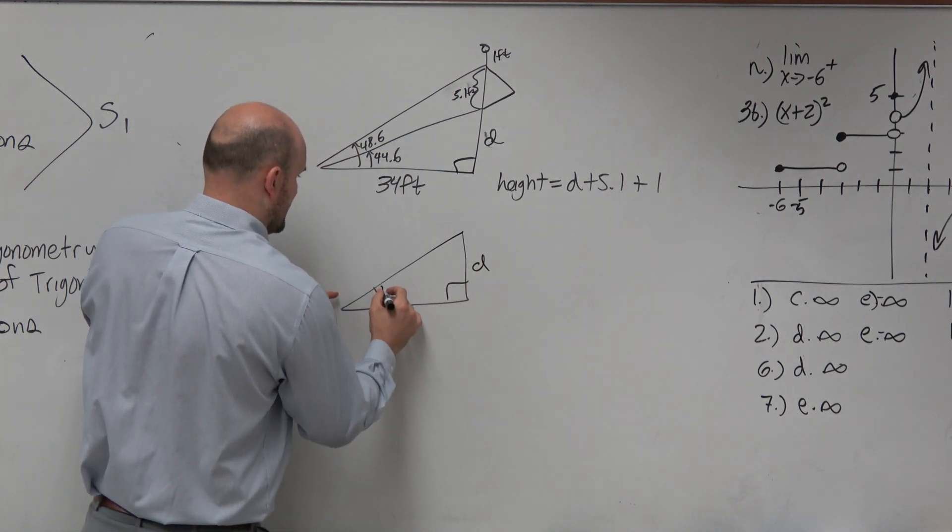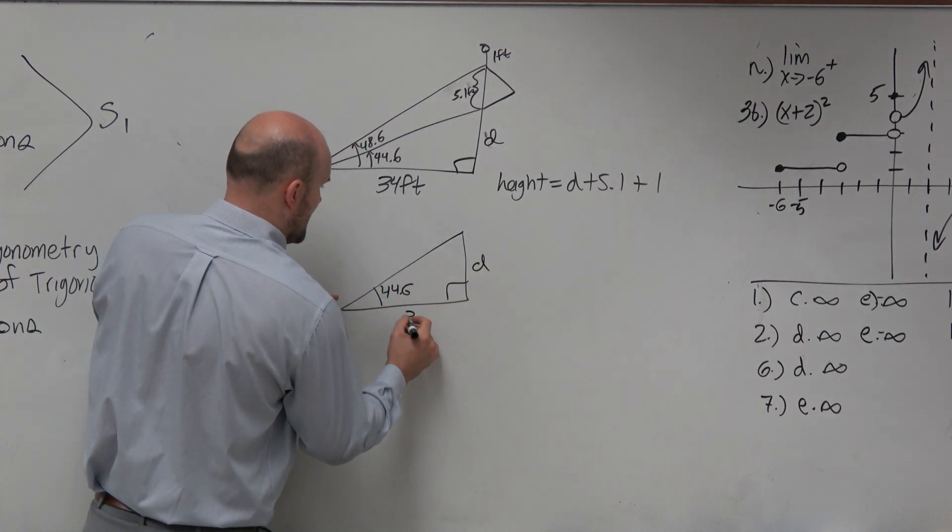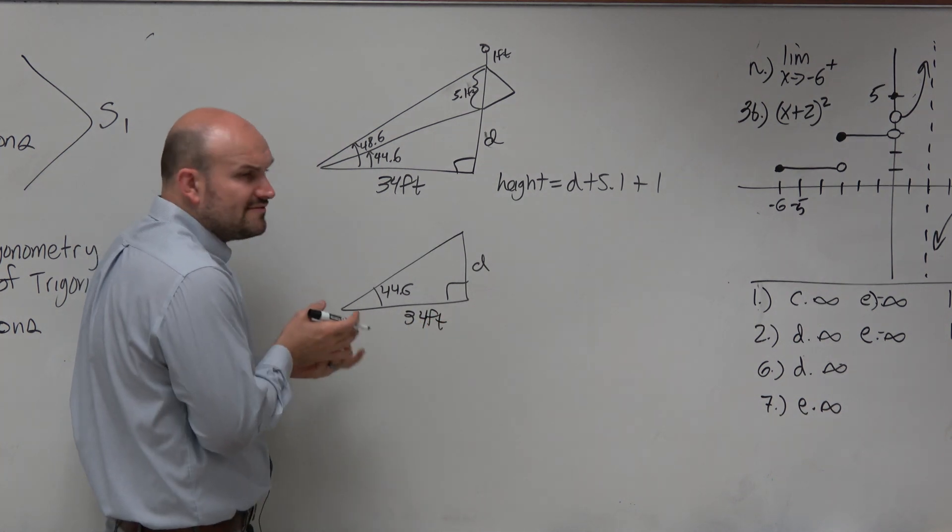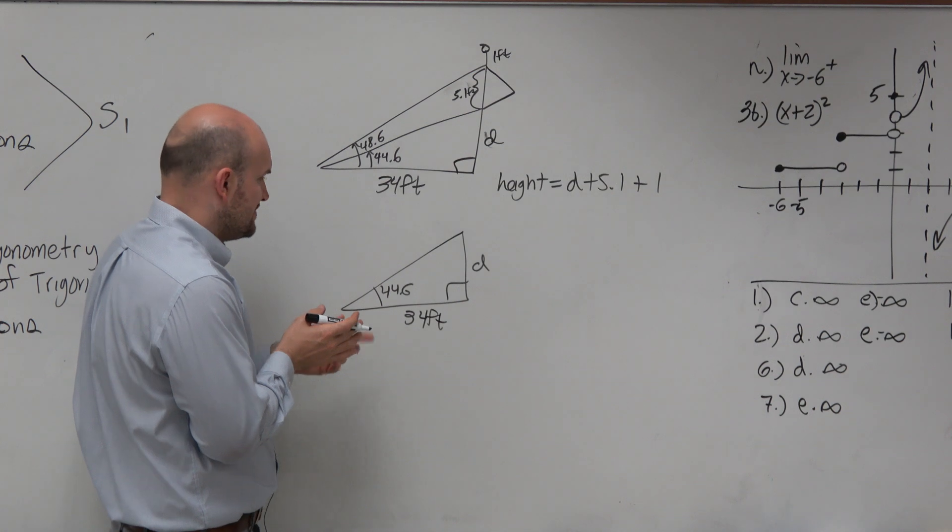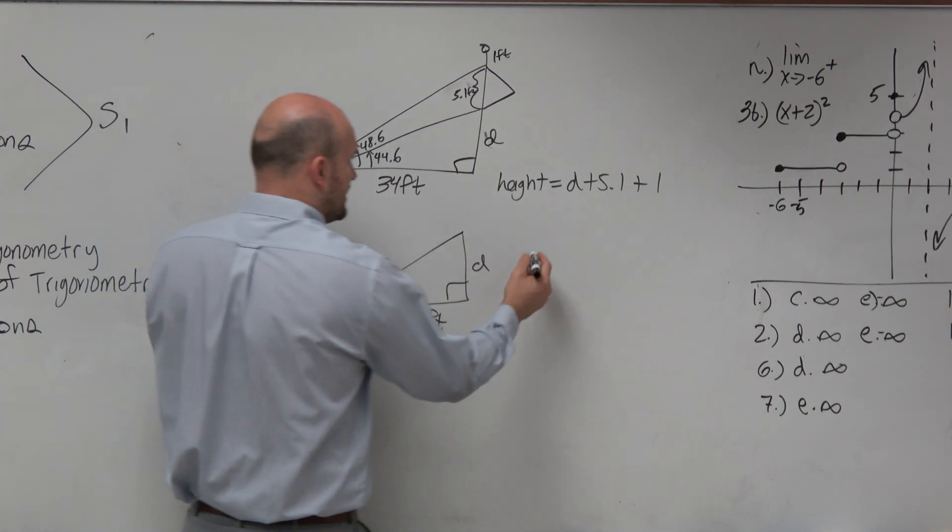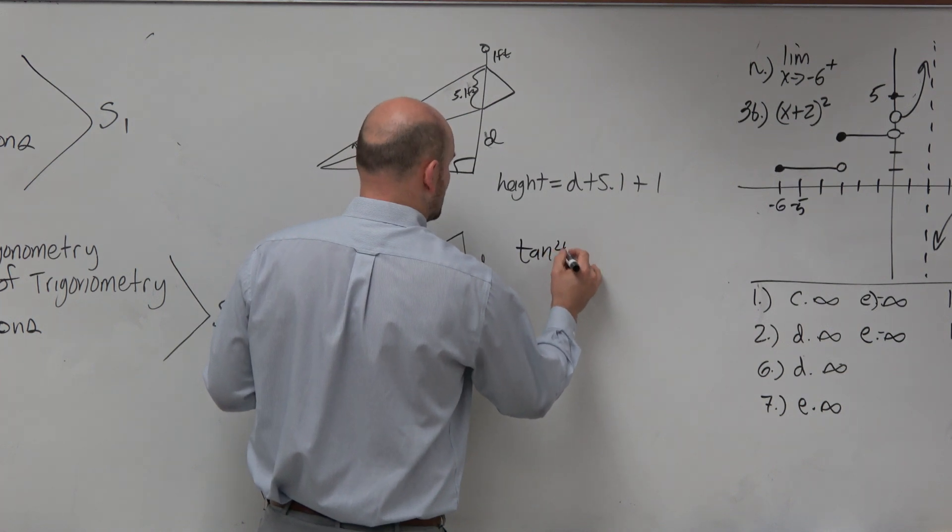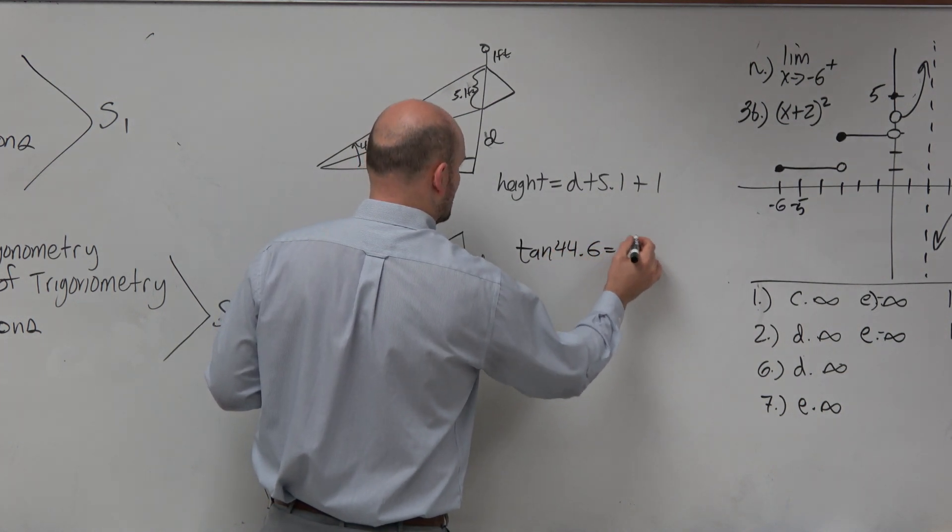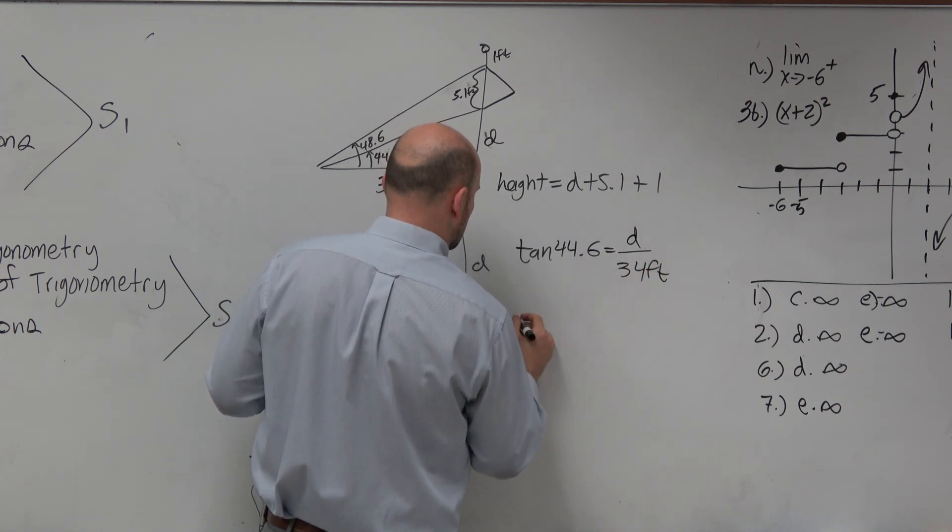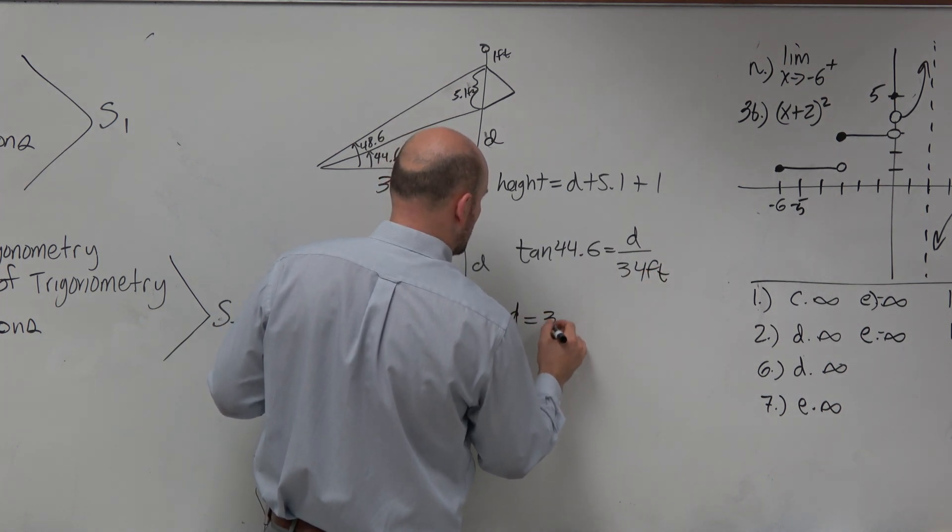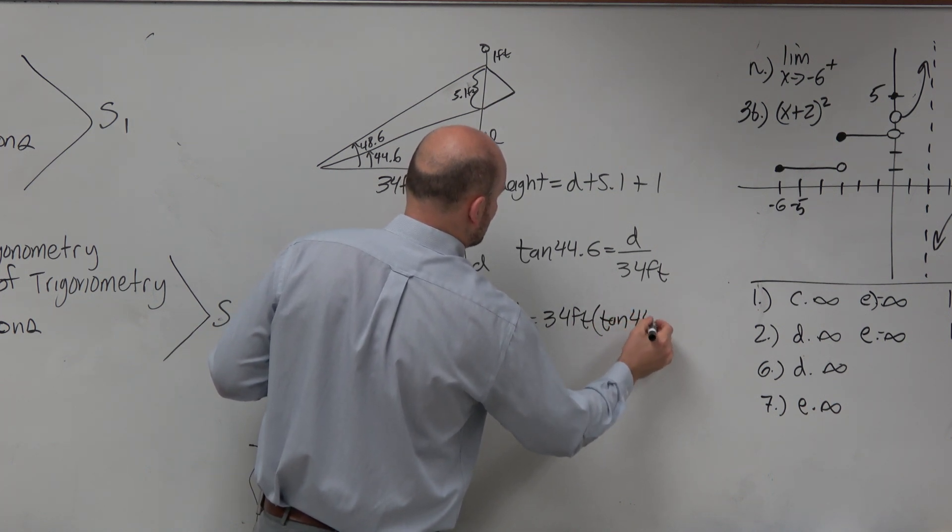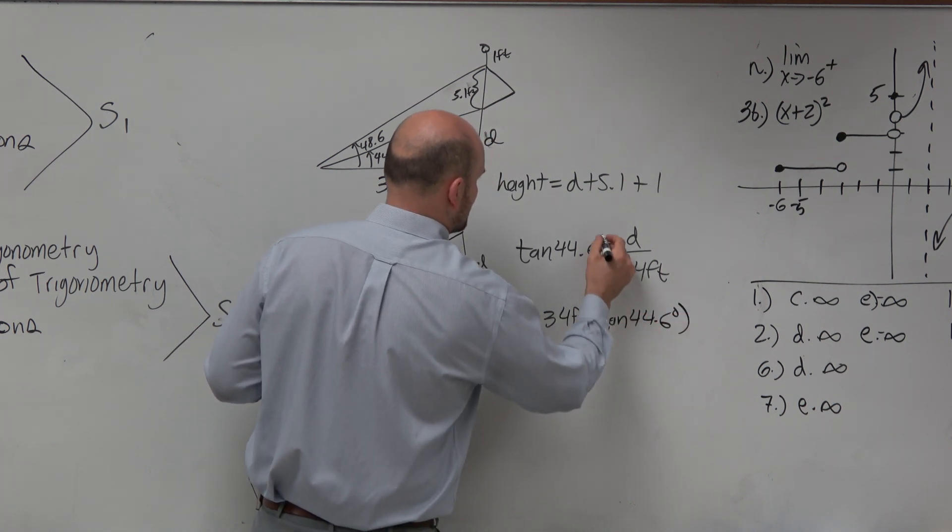Let's use 44.6 and 34 feet. I have enough room here. I can use, if I need, here's my angle. Here's my opposite side. Here's my adjacent side. Therefore, I can use the tangent function. Tangent of 44.6 equals d over 34. And d is equal to 34 feet times the tangent of 44.6 degrees. I should probably put the degrees there.